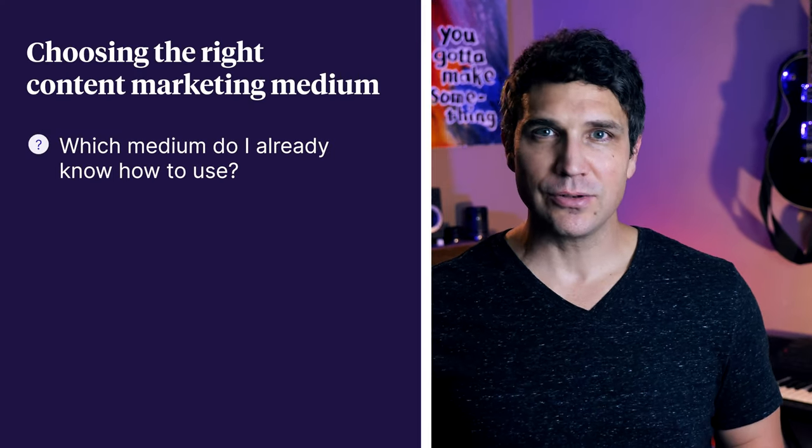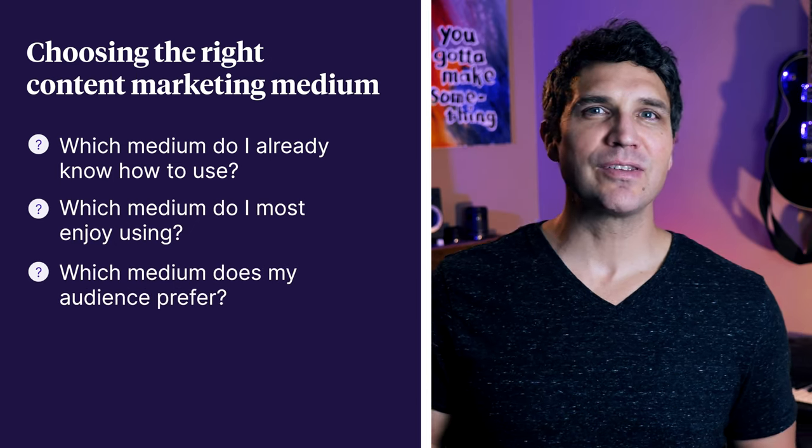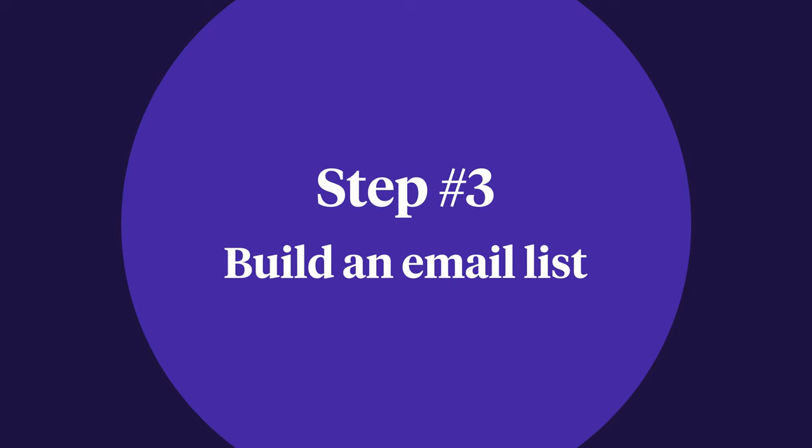Choose the medium that fits best by asking three questions: Which medium do I already know how to use? Which medium do I most enjoy using? Which medium does my audience prefer? Once you've determined where and how you're going to reach your audience, you can begin the process of growing an audience that you own. An email list is still one of the best ways to do that. So in our final step, we're going to talk about growing an email list. Email allows you to build a stronger connection with your audience and makes it easier to develop, market, and sell products.